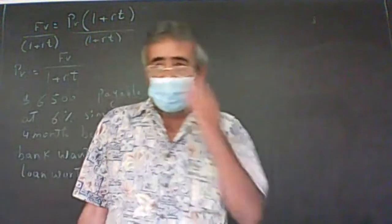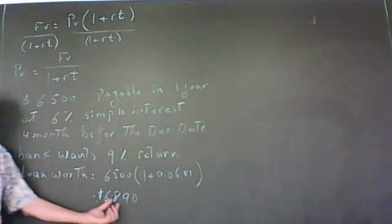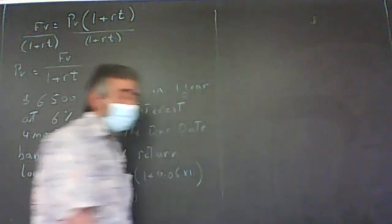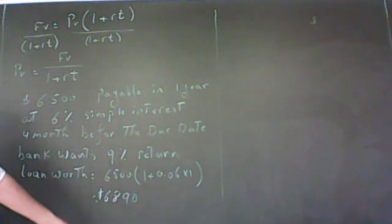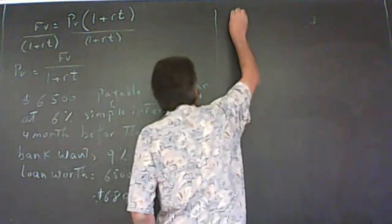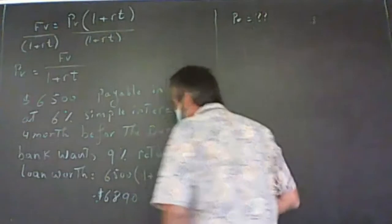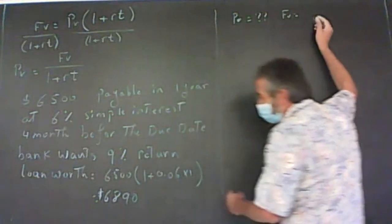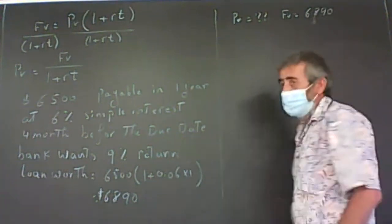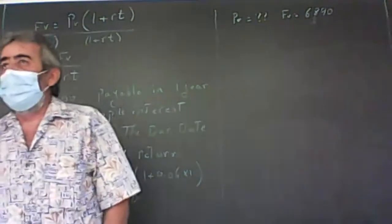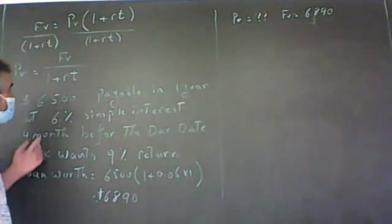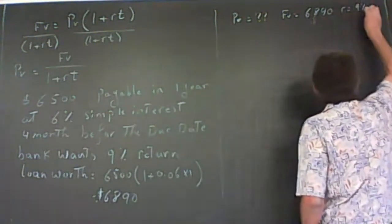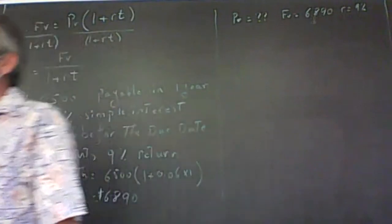So the bank will collect $6,890 at the end of the year. Now we need to know how much the bank is going to pay today — that's the present value for the bank. The future value for the bank is $6,890. The bank wants 9% return, so R = 0.09 for the bank.